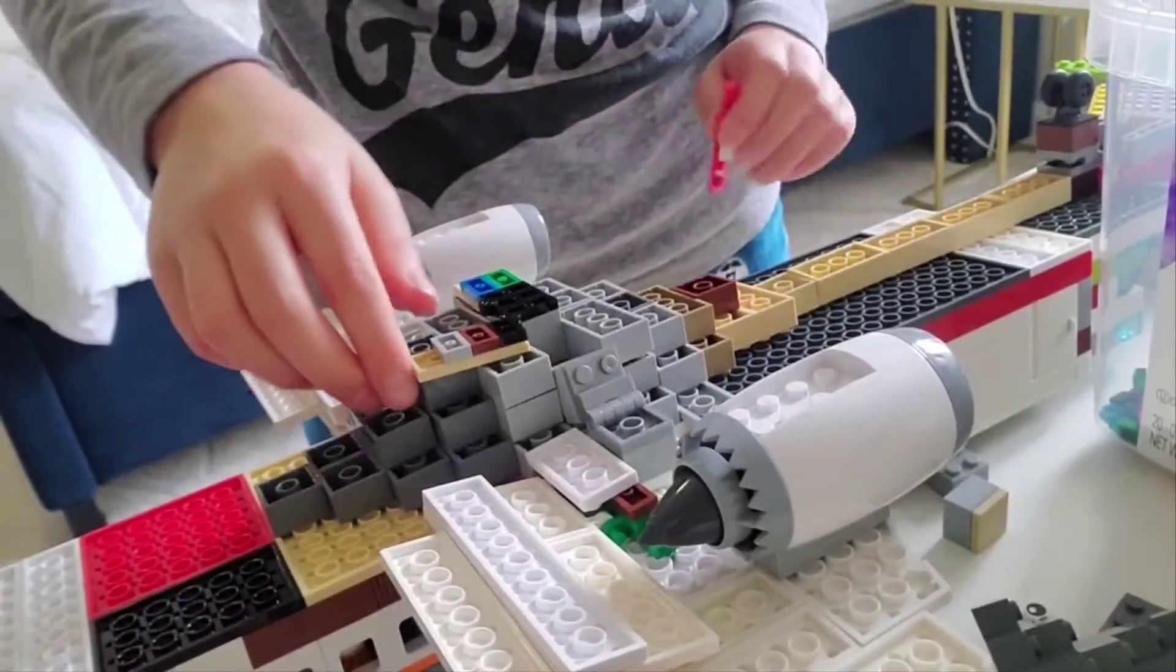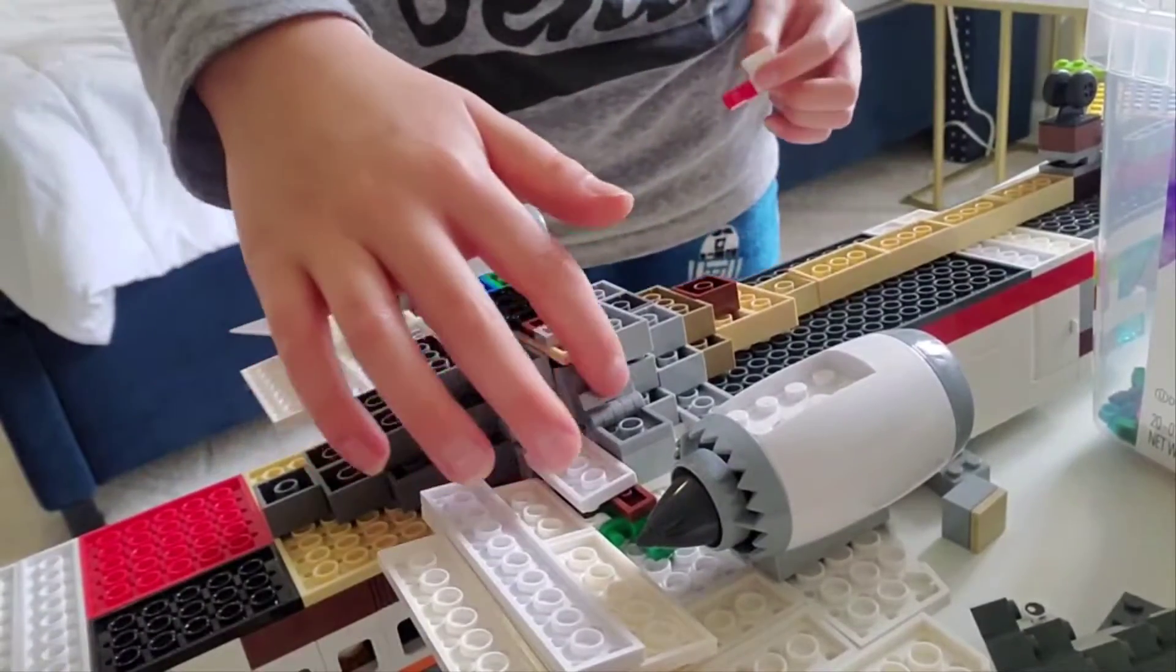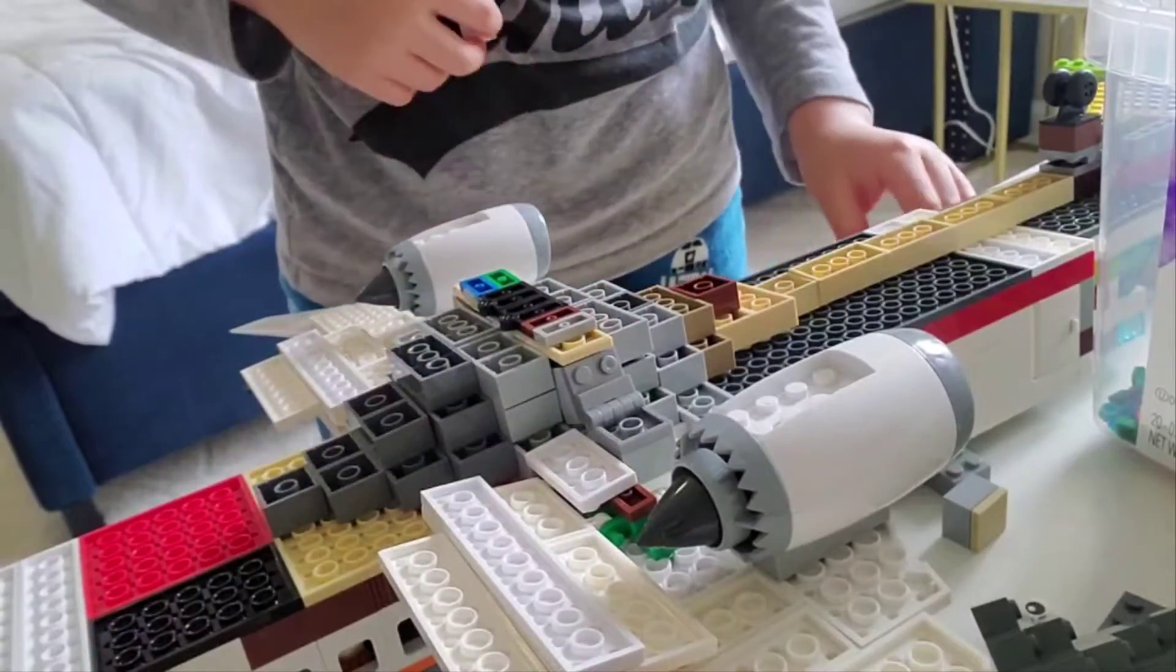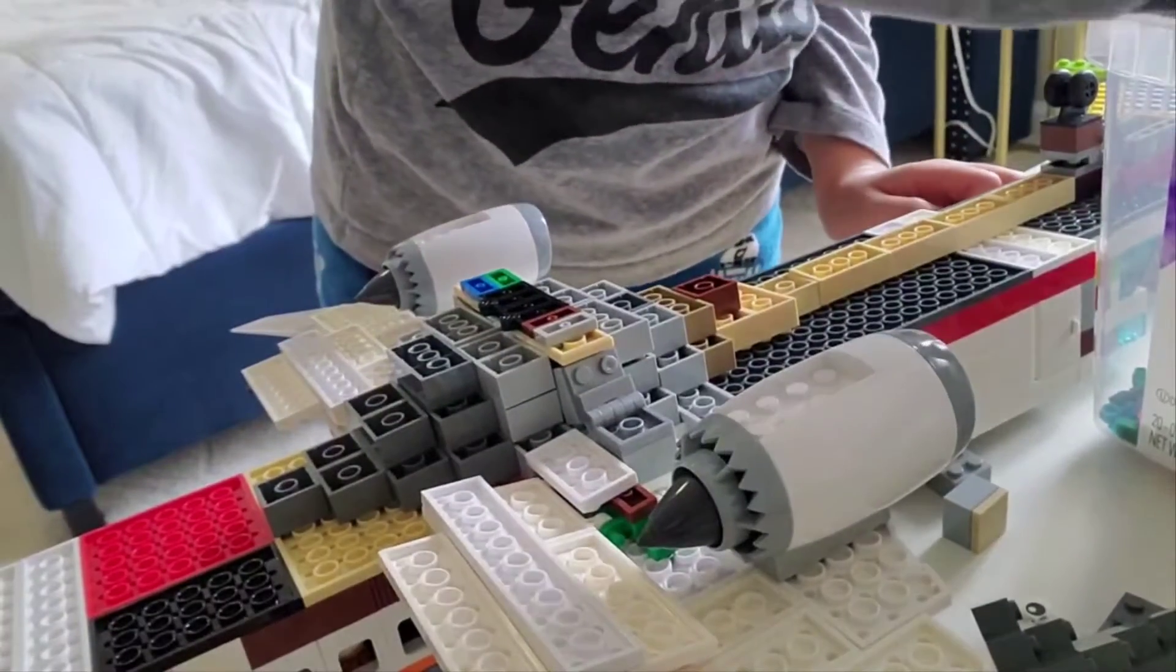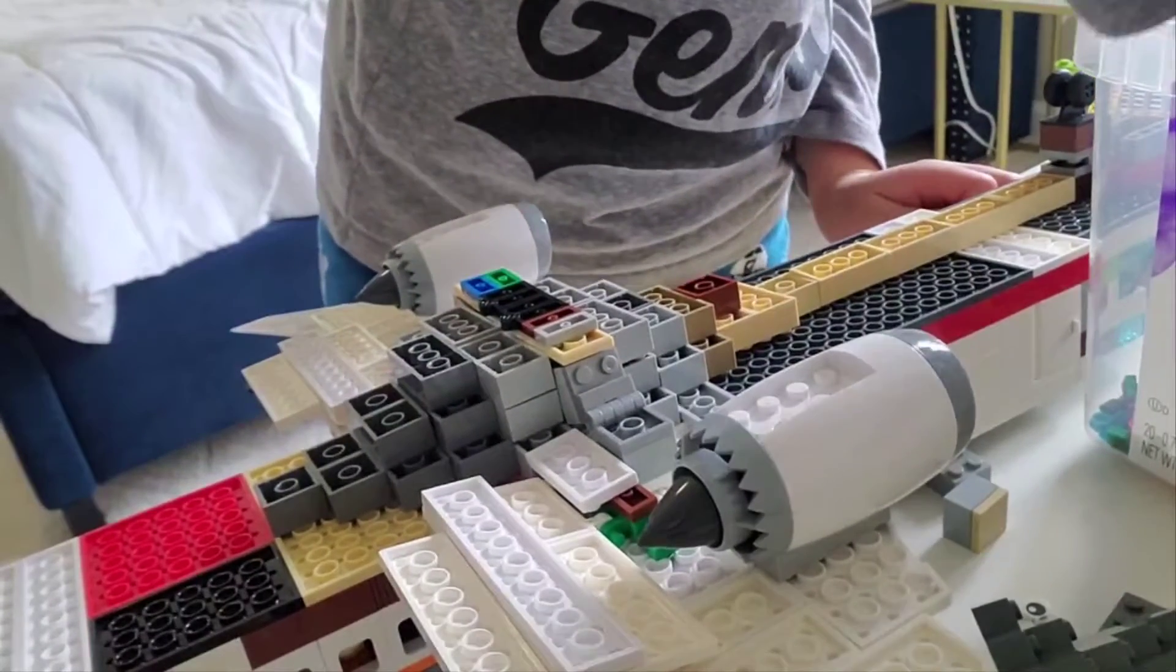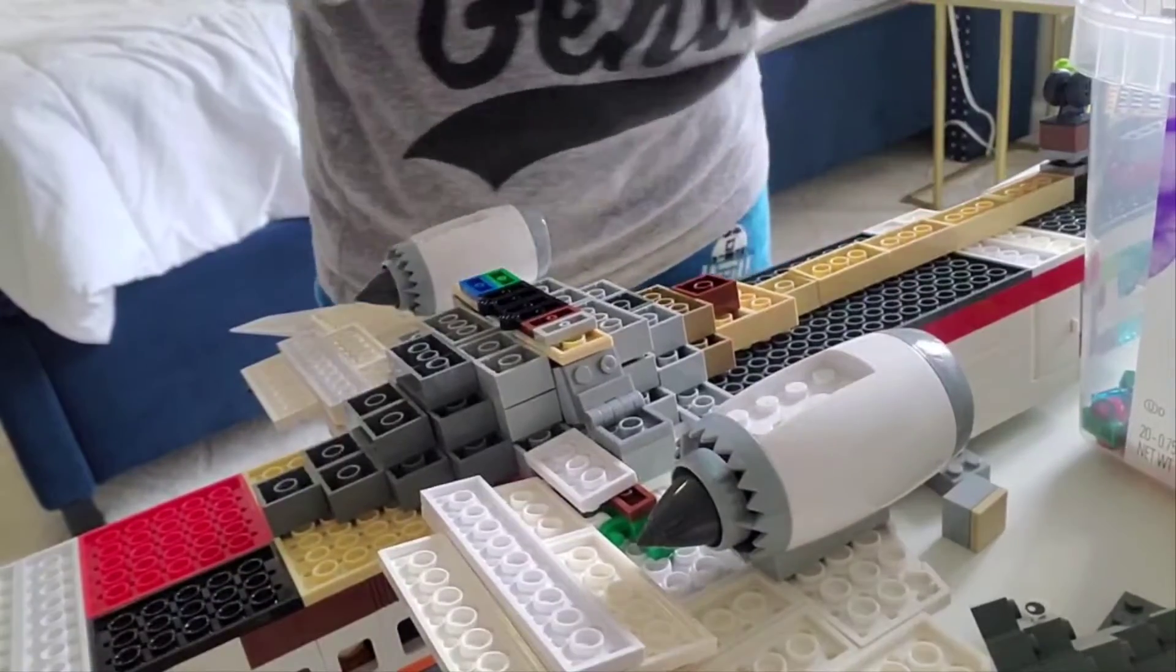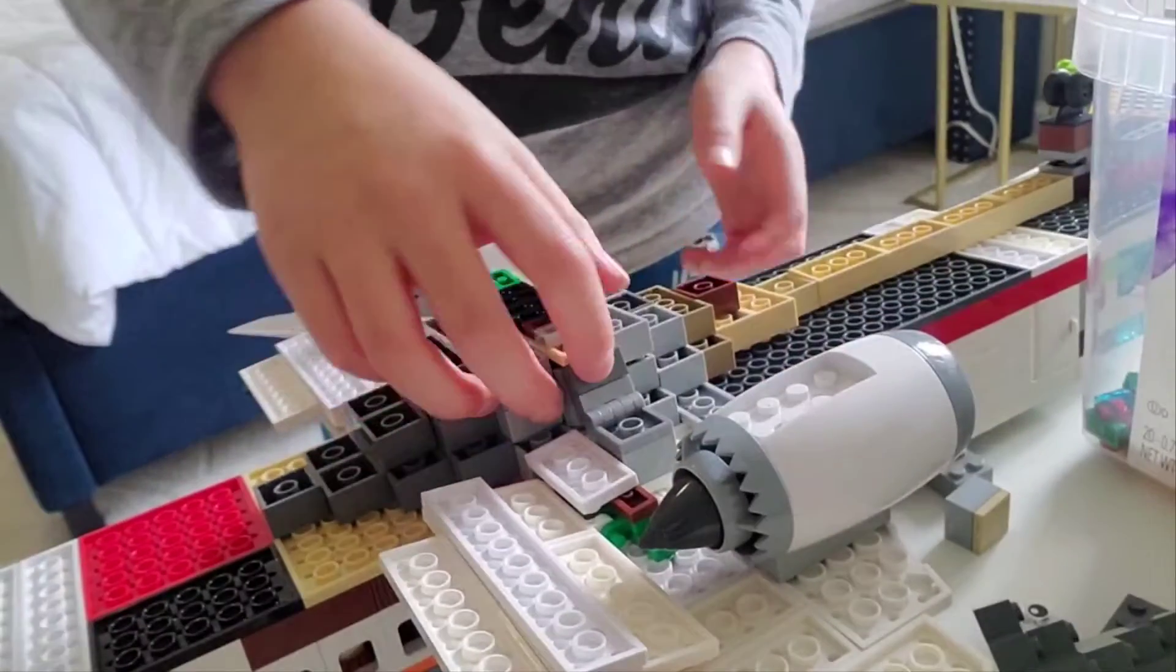Right, I forgot to take that off. So yeah, I'm definitely probably going to be adding like something here. Probably like a 1x2 tile. Such as something like this to make it look a bit more smoother.